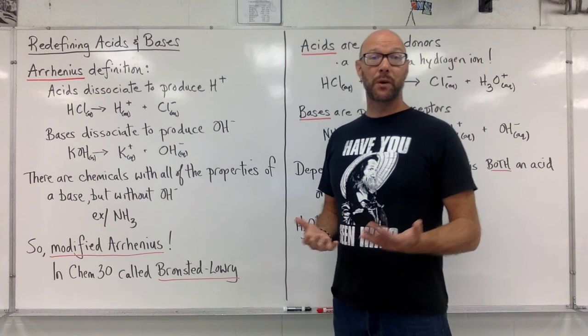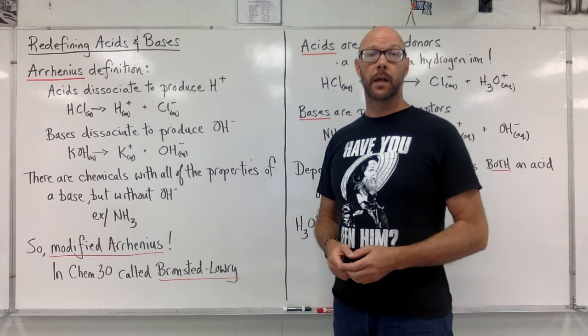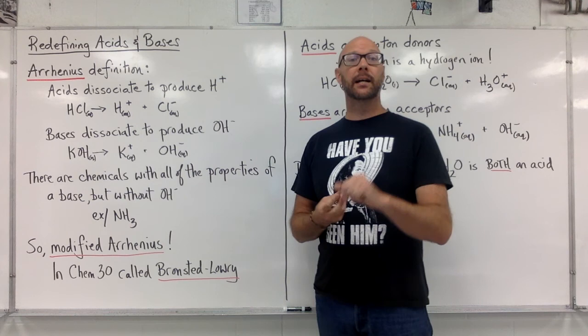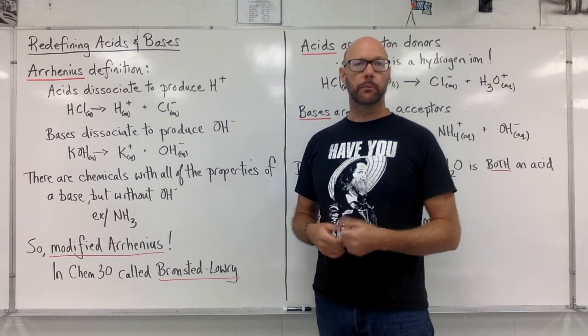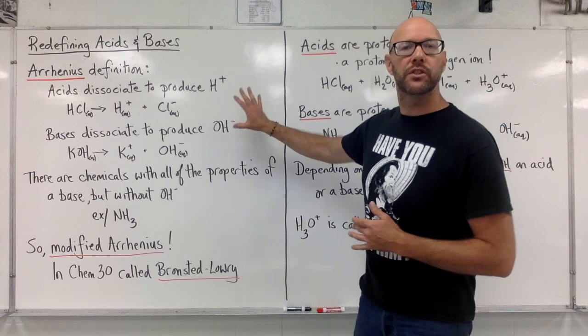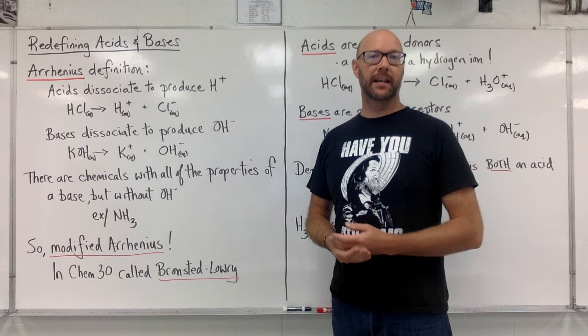The thing is, there are chemicals with all the properties of bases in particular, but that don't include hydroxide ions. For example, ammonia NH3. If you have some ammonia, it has all the characteristics of a base. It turns litmus paper blue, it is alkaline, it can neutralize an acid. But first of all, it's molecular. It doesn't dissociate. In addition, just looking at the formula, it doesn't have hydroxide ions in it. So that's a signal that there's a problem with this theoretical framework. A scientific law is not allowed to have exceptions.